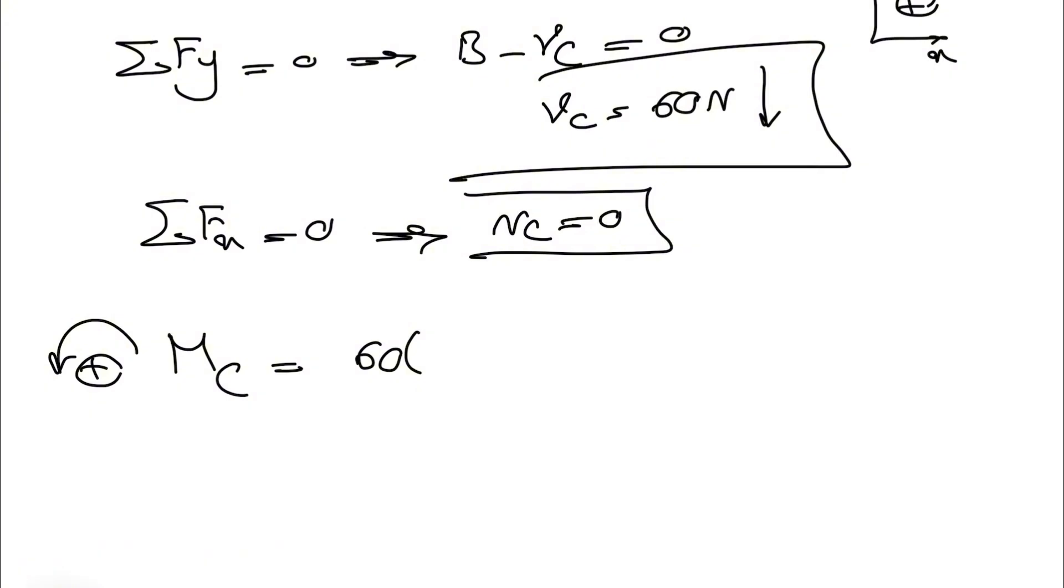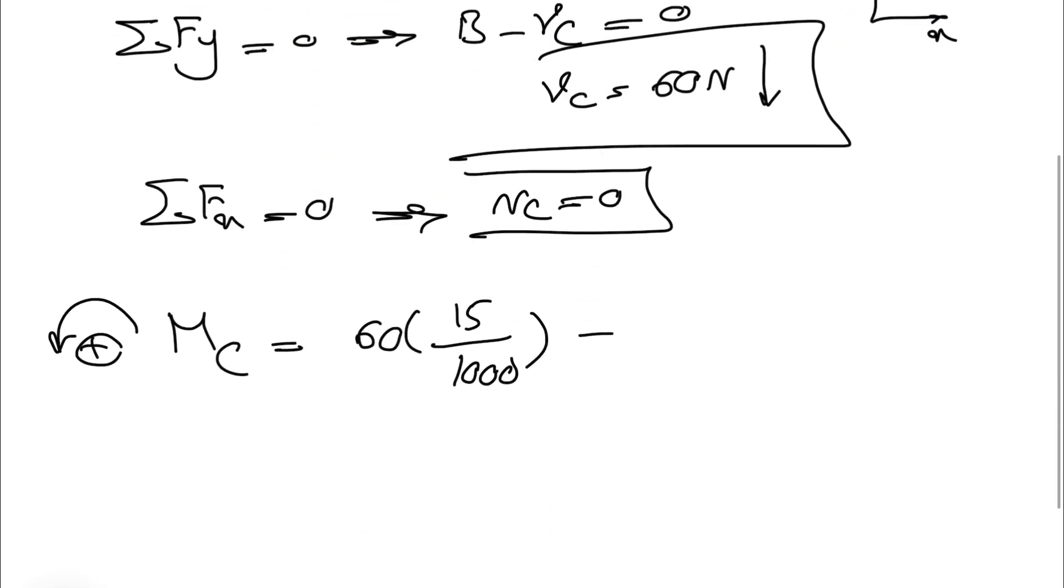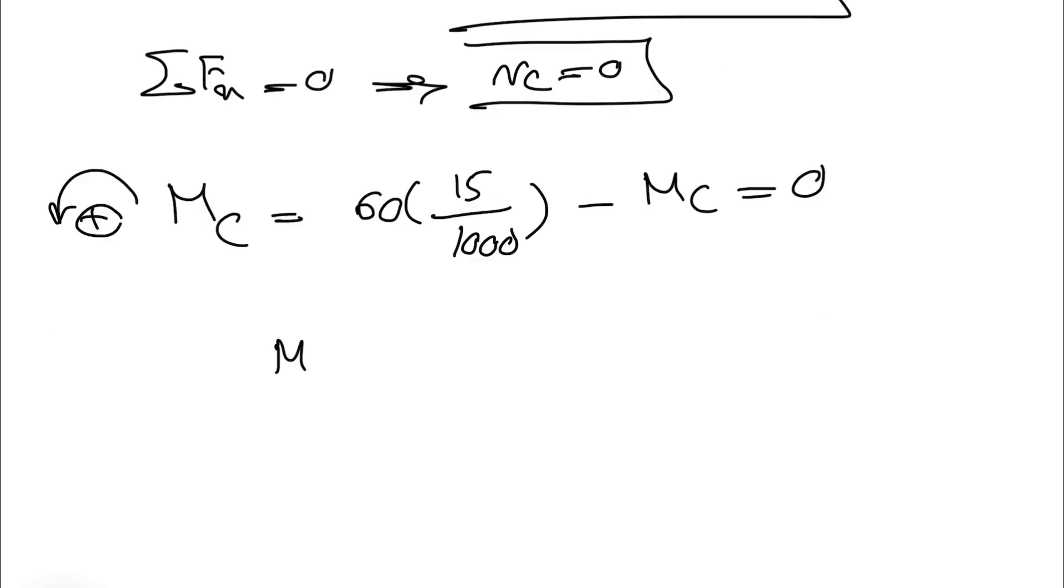Keep in mind we need to divide it by a thousand in here, and we consider our MC clockwise so we have a negative sign, is equal to zero. So our MC here would be, we can cancel out one of the zeros, 6 times 15 will be 90 divided by 100, so 0.9 newton meters.